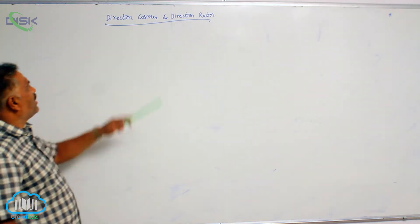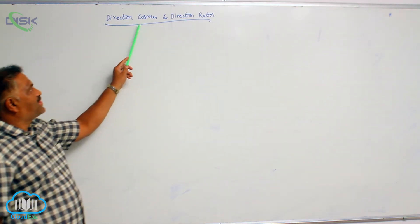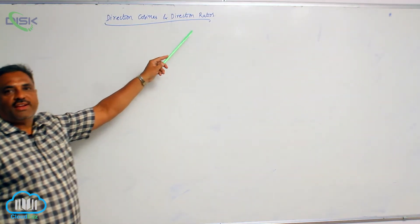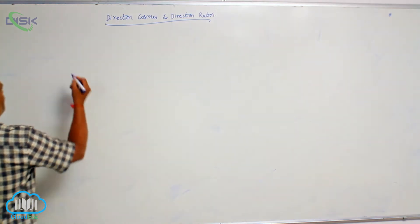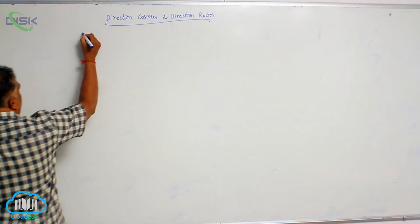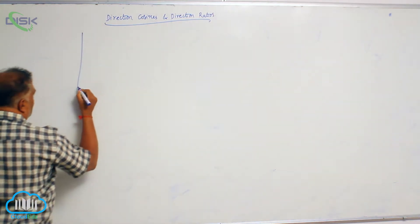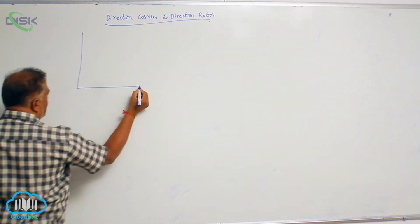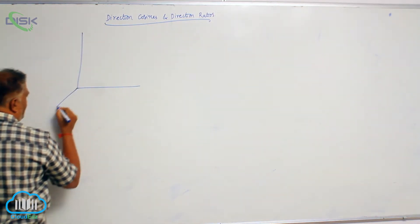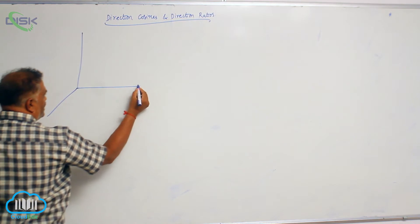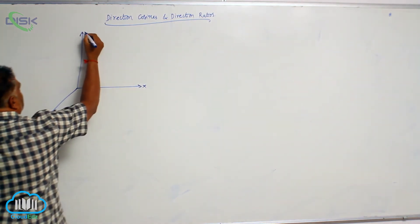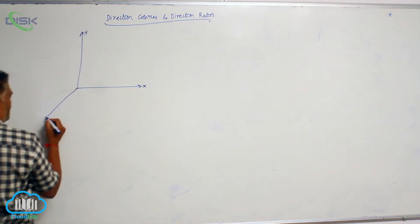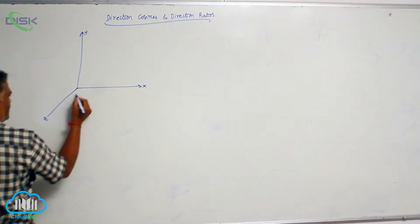We will discuss a new topic called direction cosines and direction ratios. Let us take the coordinate axes — this is the x-axis, this is the y-axis, this is the z-axis.